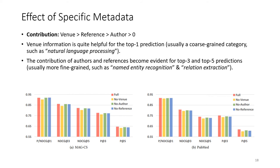We also did an ablation study to check the effect of specific metadata. So instead of ignoring all of them, we can overlook one specific type. And the conclusion is that all of them have positive contribution. However, venue information is the most helpful one in almost all cases, and it is quite helpful for top-one prediction, which is usually a coarse-grained category such as natural language processing.